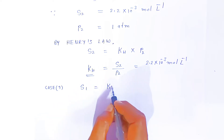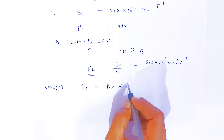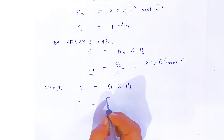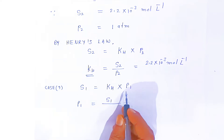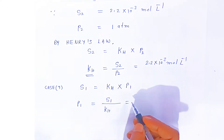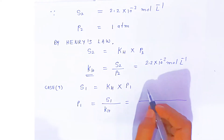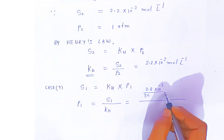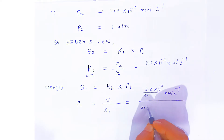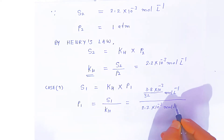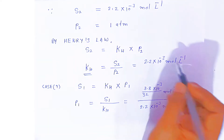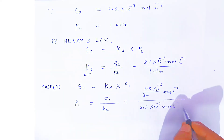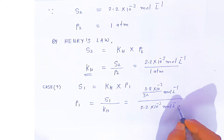Now in case 1: S1 equals Henry's law constant of oxygen multiplied by P1. We want pressure P1, so P1 = S1 divided by Henry's law constant. S1 we have converted to mole per litre: 3.8 × 10⁻³ upon 32 mol per litre. Dividing by the Henry constant 2.2 × 10⁻³ mol per litre per atm — the mol per litre units cancel — and you get pressure in atmosphere.